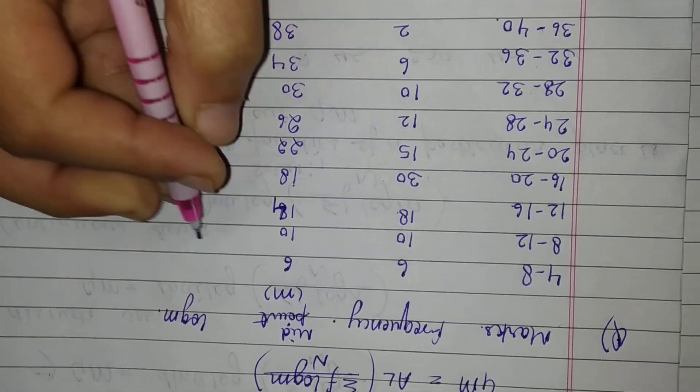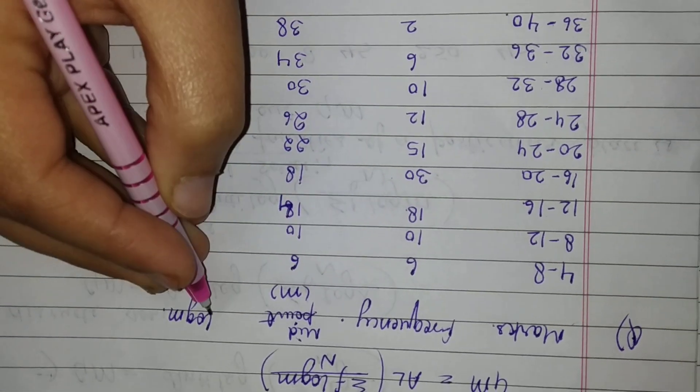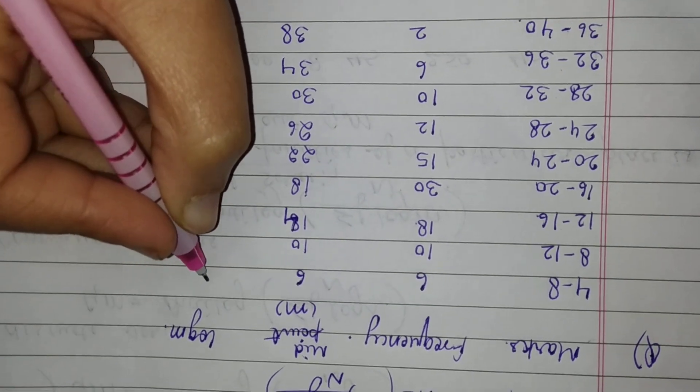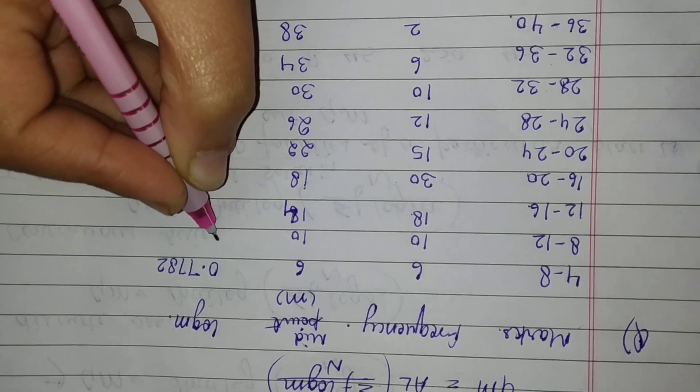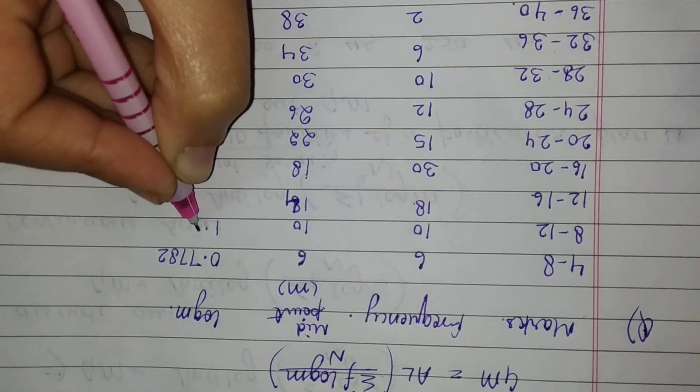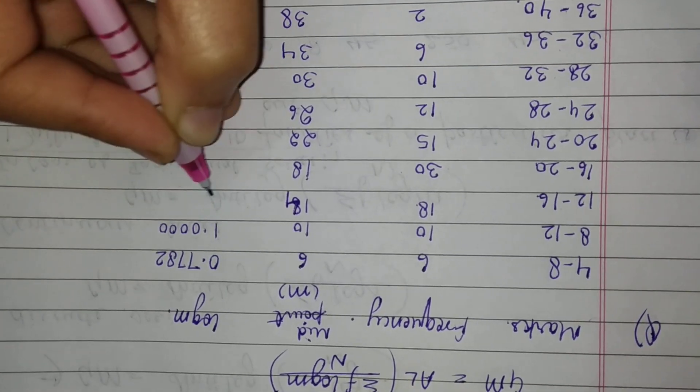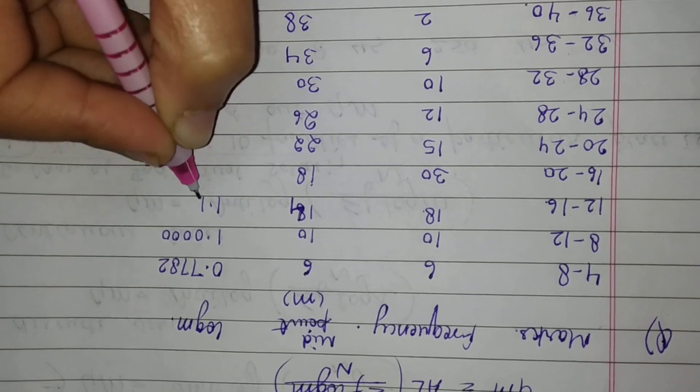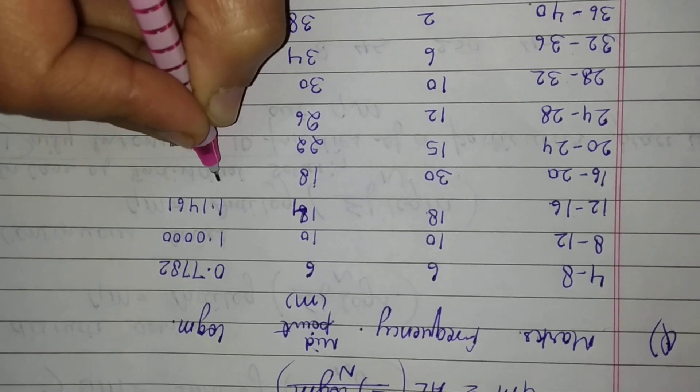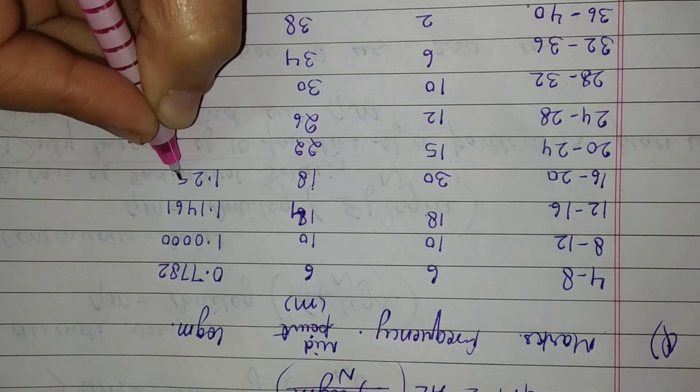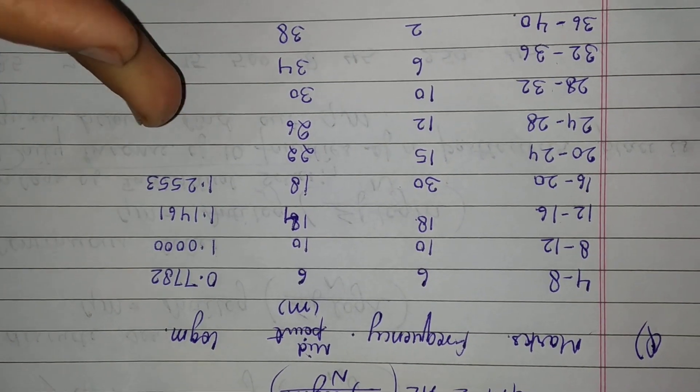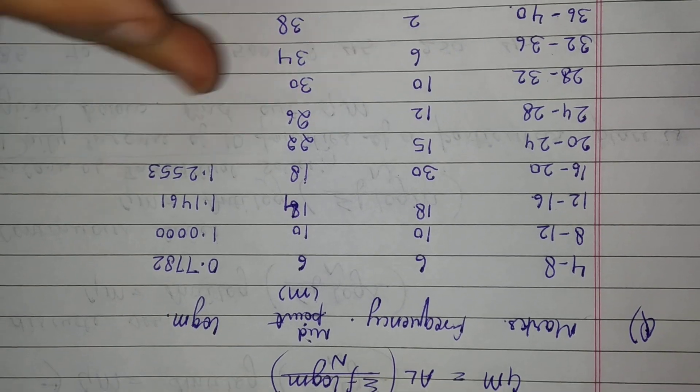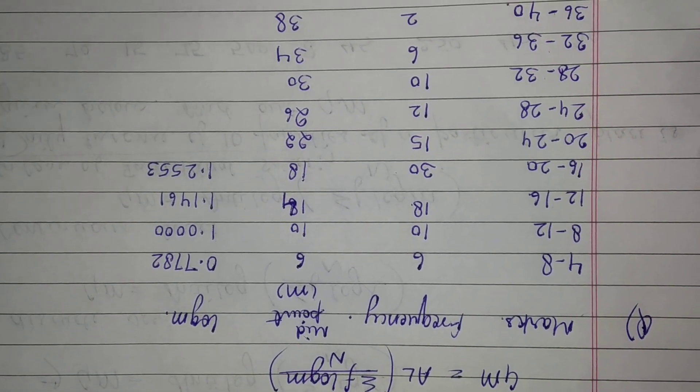The value of log 6 is 0.7782. Similarly I can obtain all the log m values. These values can be calculated directly from a calculator or from your phone's calculator.